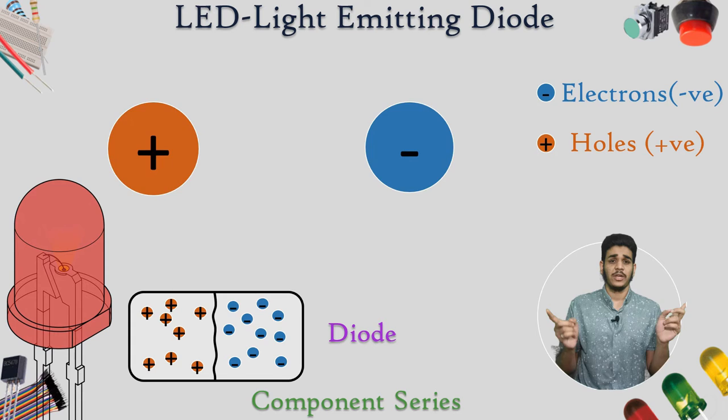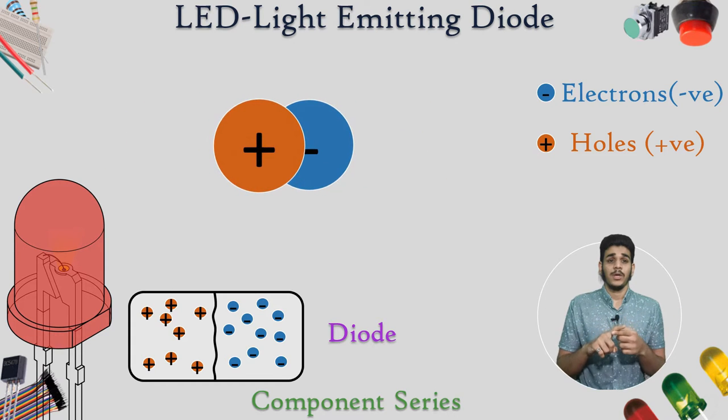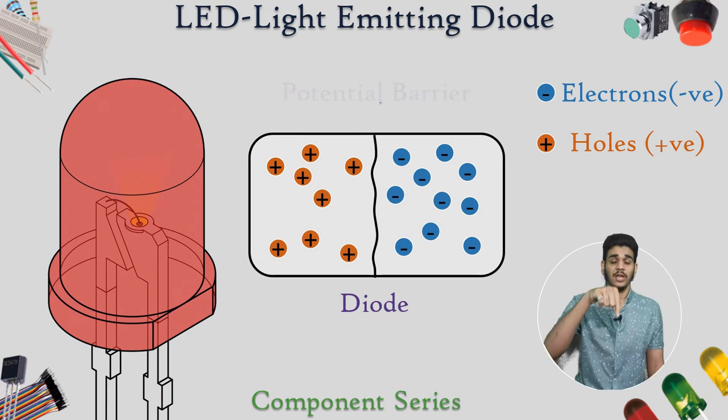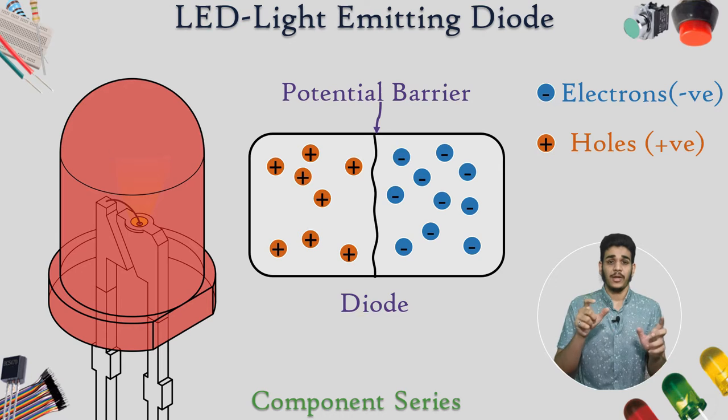And in nature, what happens is that electrons and holes attract each other. But here in the material you can see there is one barrier which blocks both the holes and electrons from attracting each other.